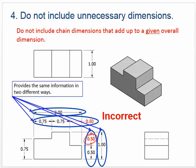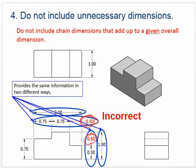Similarly here, .75 and .75 equals 1.5, and we know the overall is two inches — so we don't need you to tell us the remaining segment is .5 inches. That would be the correct way to dimension this one, omitting the redundant dimension.